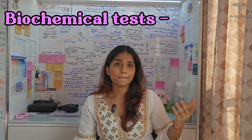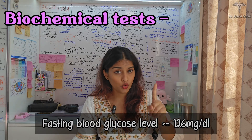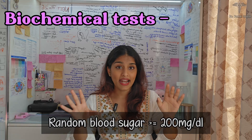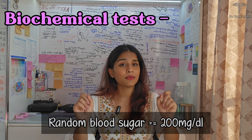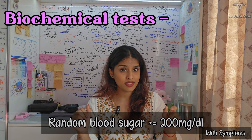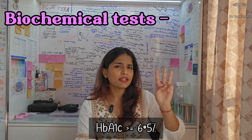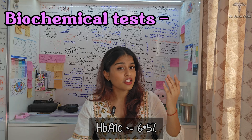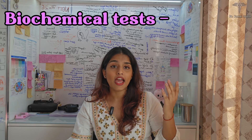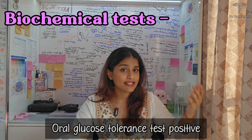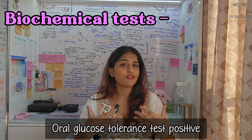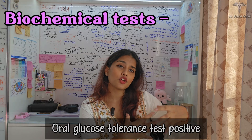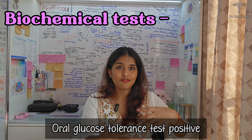For biochemical diagnosis, the tests include: fasting blood glucose of 126 mg/dL or more; random blood sugar above 200 mg/dL with symptoms; HbA1c — a 3-month average of blood sugar — of 6.5% or more; and a positive oral glucose tolerance test, where the doctor gives you 75 grams of glucose and then checks your blood sugar levels to see if your body can handle it properly.